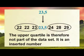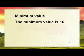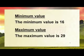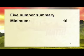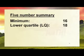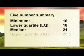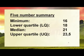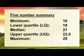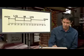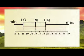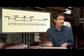The five number summary is: minimum 16, lower quartile 18, median 21 (part of the set), upper quartile 23.5, maximum 29. We draw the box and whisker: minimum 16, lower quartile 18, median 21, upper quartile 23.5, maximum 29. See how easy it is to do a box and whisker plot.